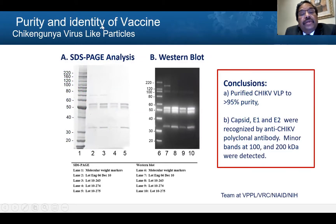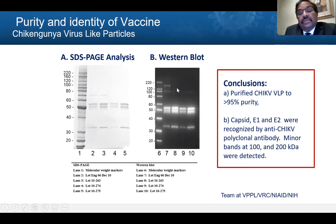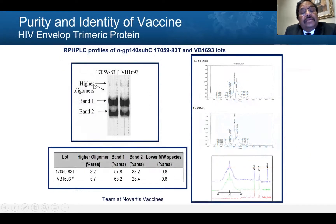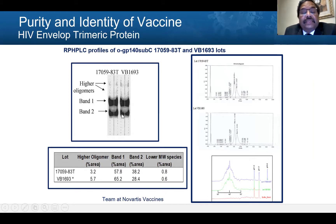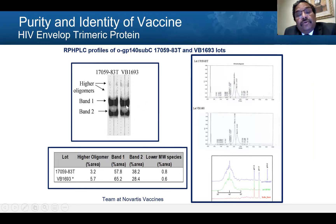The first part we want to show is purity and identity, using the chikungunya VLP vaccine example. The first thing we did is SDS-PAGE analysis. You can see E1 and E2 protein and the capsid protein — all three proteins are present. We then showed Western blot analysis to demonstrate the identity of the vaccine. For the HIV trimeric protein, this is the native gel, where we are showing the trimer and the monomer. The ratio is about 60 to 70 percent trimer and about 20 to 30 percent monomer. These trimers do dissociate during the purification and formulation process.